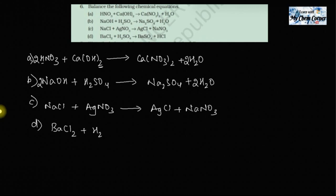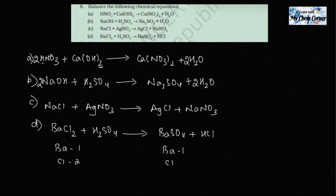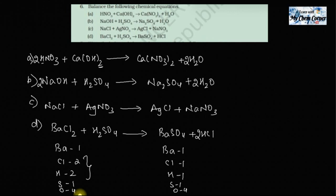The fourth equation is BaCl₂ plus H₂SO₄ giving BaSO₄ plus HCl. Ba: one each side. Cl: two on the left, one on the right. H: two on the left, one on the right. S: one each side. O: four each side. The discrepancy is in hydrogen and chlorine. Putting a coefficient of two before HCl gives two hydrogens and two chlorines on the right — balancing the entire equation without touching any other part.